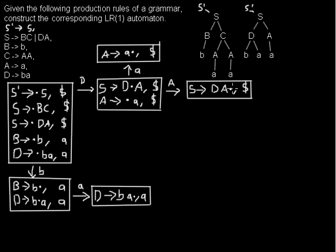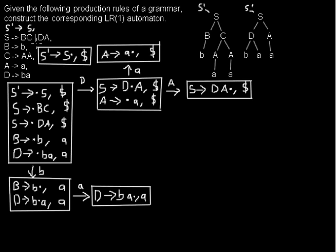That means we've seen the whole S and can go back to where we started reading the right-hand side. If we saw the whole S, we move the dot over S in S' → S•. This will be our final state — we've seen everything of the input string, so I draw a double border around it.